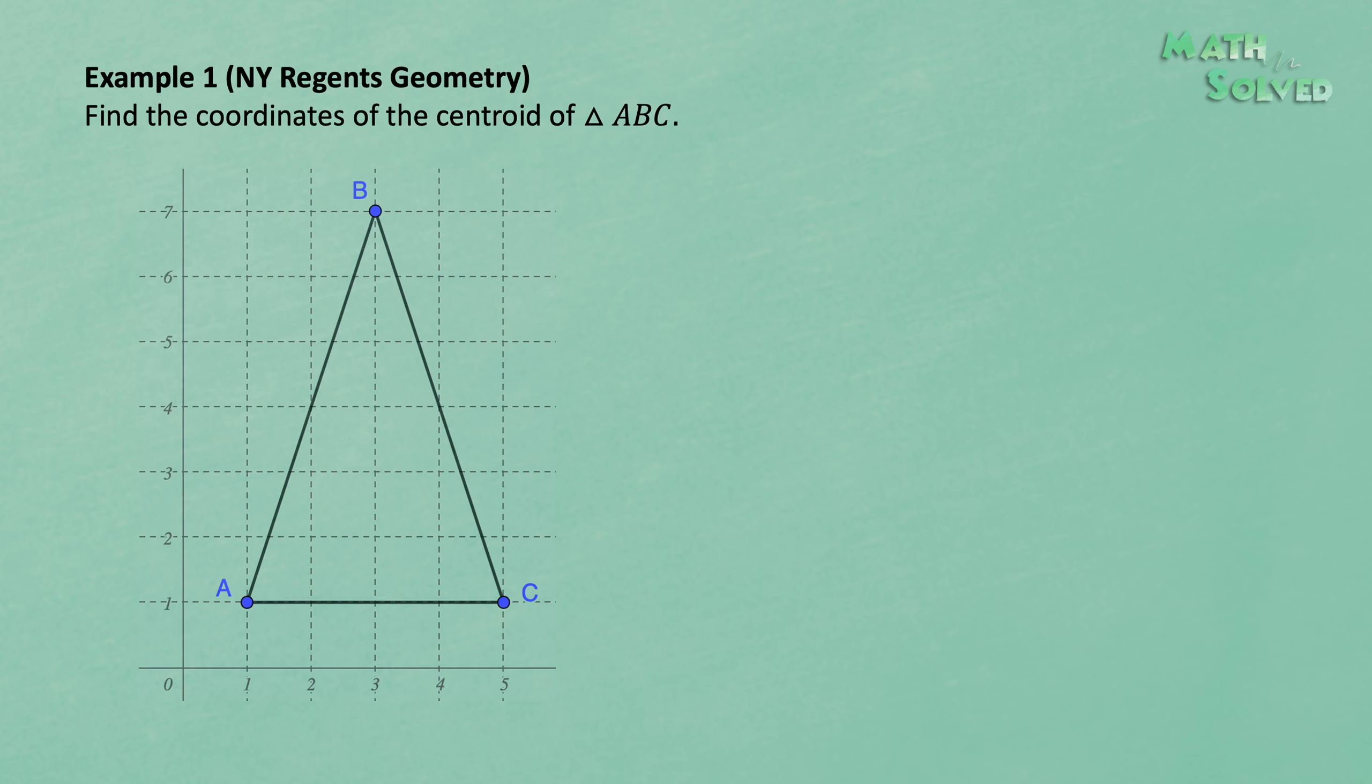Here in triangle ABC, we want to find out the coordinates of the centroid. As you may notice, this triangle is very special because it's an isosceles triangle with AB equal to BC.